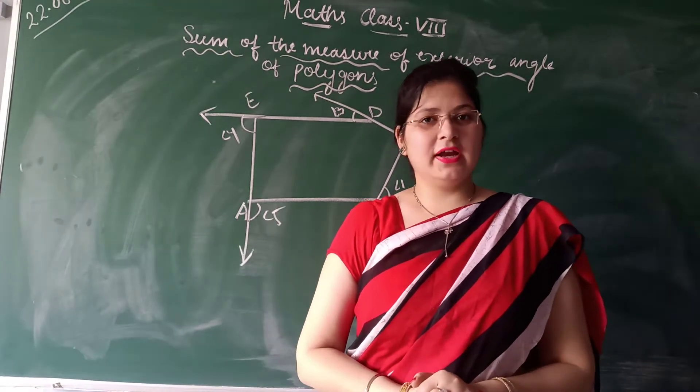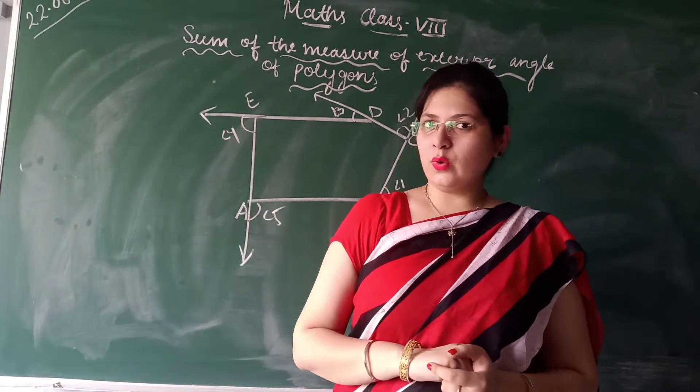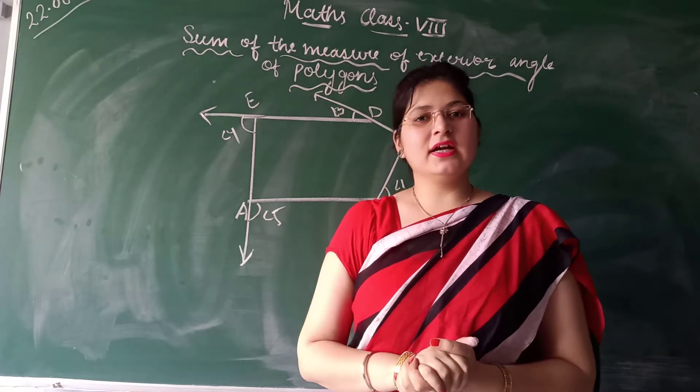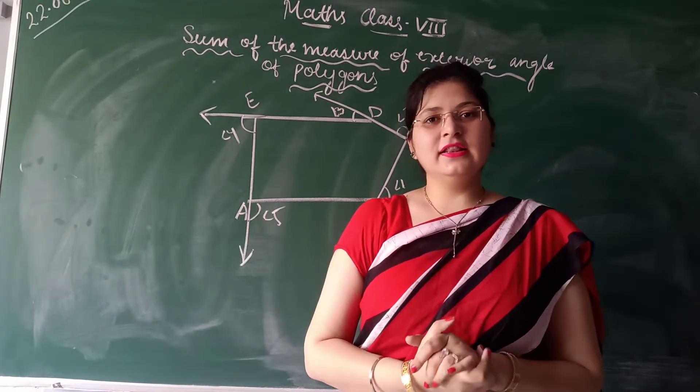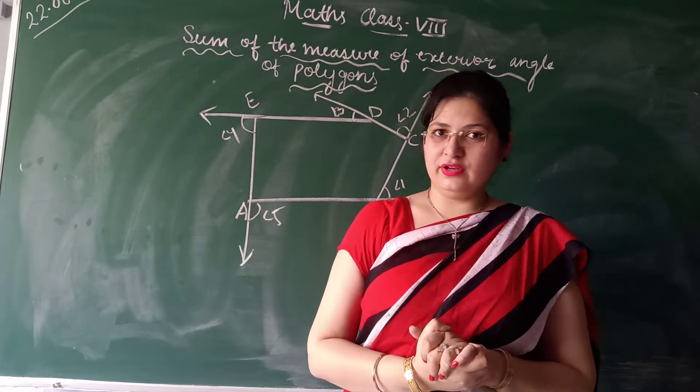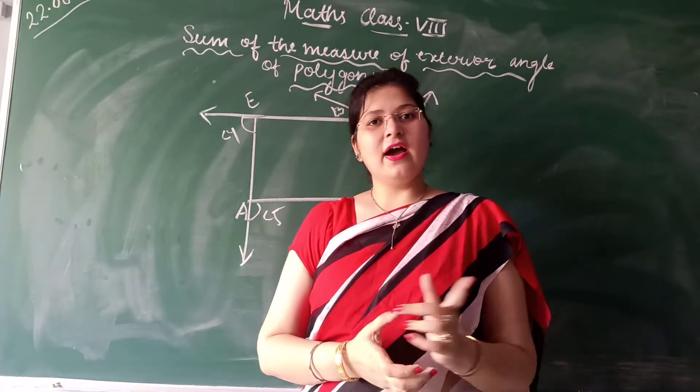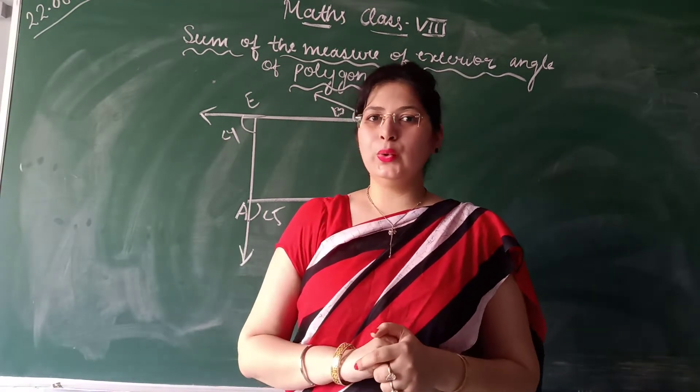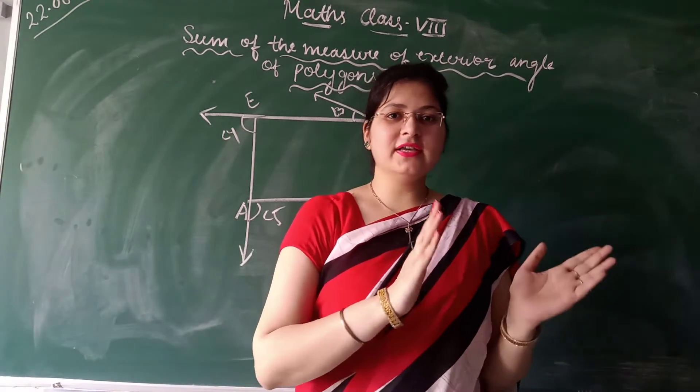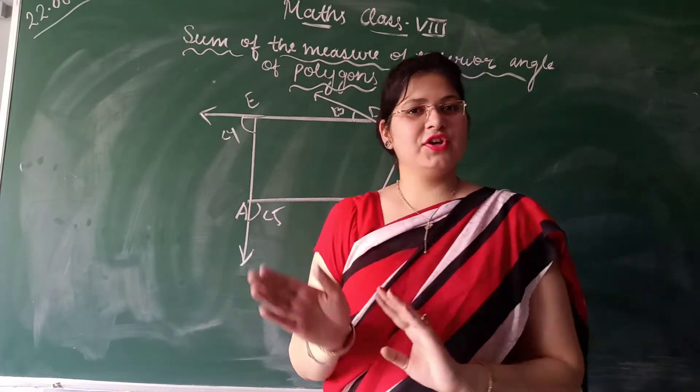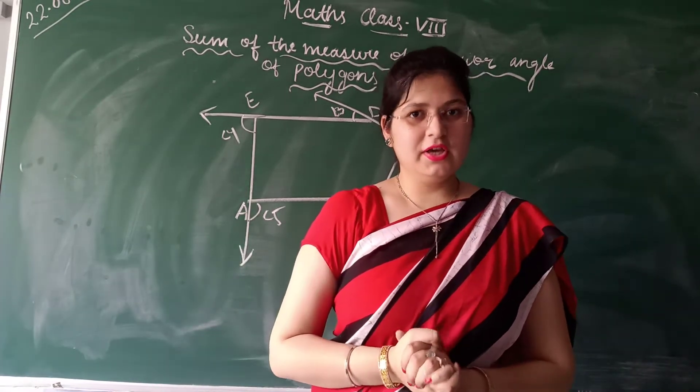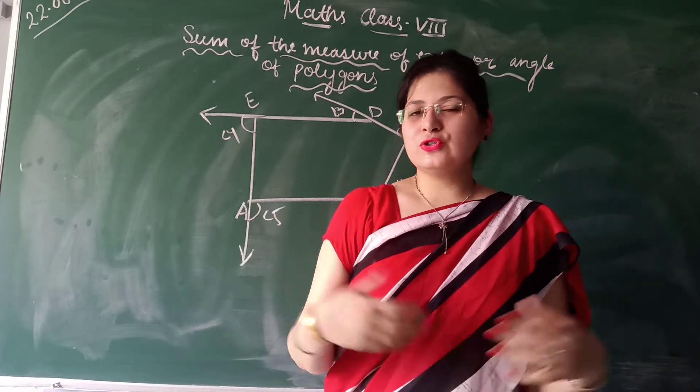In the previous class we have studied exercise 3.1 of chapter number 3, understanding quadrilaterals, and we have done question number 7. In question number 7, after completing it I told you that the sum of the exterior angle of triangle and the sum of the exterior angle of polygon is 360, and in the next video I will give you the proof.